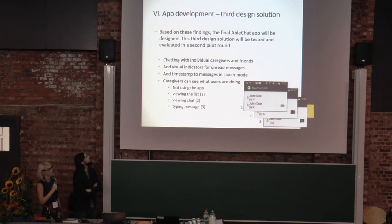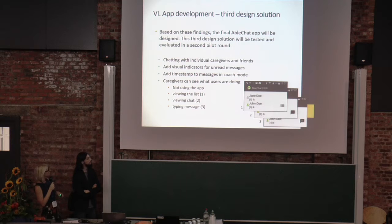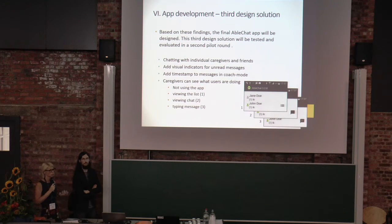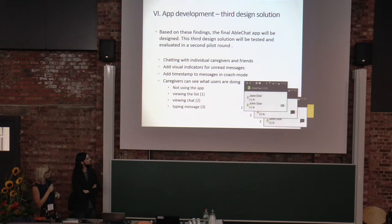Based on these findings, the final AbleChat app will be designed and a third design solution will be tested in a second pilot round. Chatting with individual caregivers is now possible. Visual indicators for unread messages have been added, timestamps have been added to messages in coach mode, and the caregiver can now see whether the user is viewing the list, viewing the chat, or typing a message.